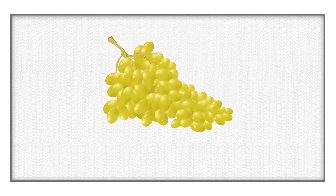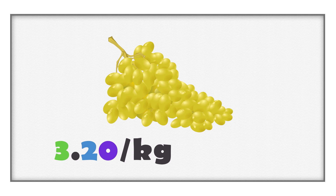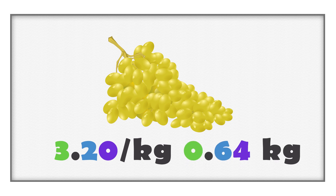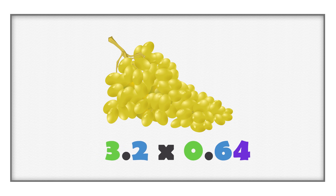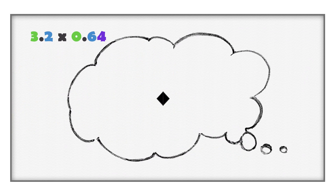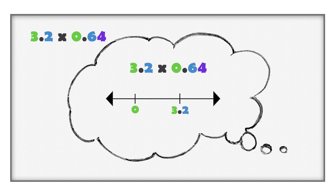Let's calculate the cost of the grapes by multiplying three dollars and twenty cents per kilogram with sixty-four hundredths of a kilogram. Three dollars and twenty cents is the same as three and twenty hundredths of a dollar, or three and two tenths of a dollar. Sixty-four hundredths is part of a whole. When we multiply three and two tenths by part of a whole, the product will be smaller than three and two tenths. An estimate is a value less than three and two tenths.